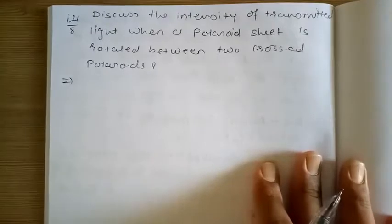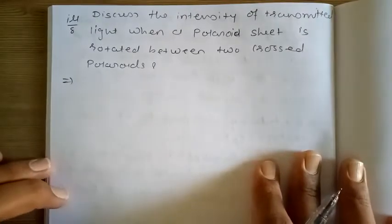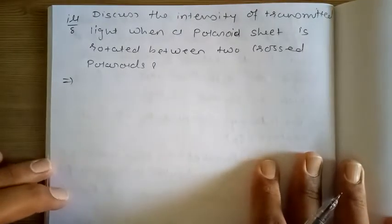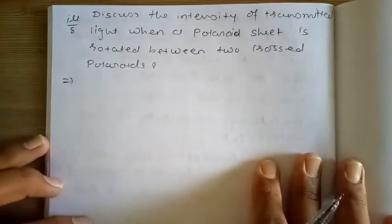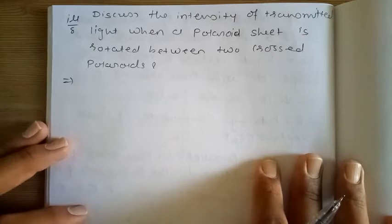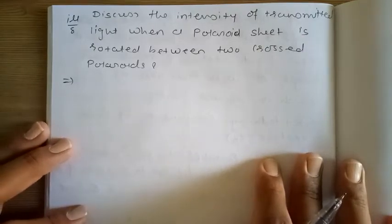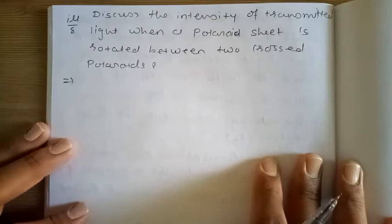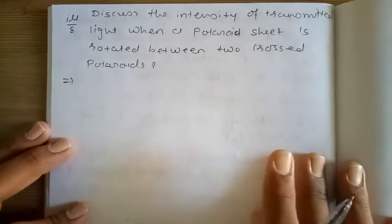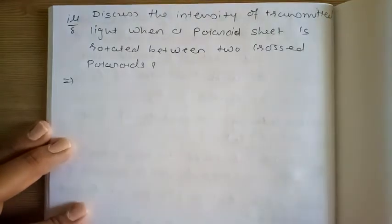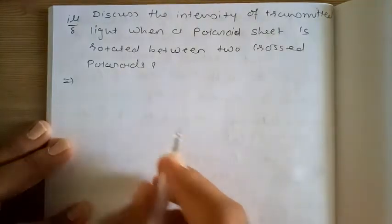Hello friends. Illustration No. 8: Discuss the intensity of transmitted light when a polaroid sheet is rotated between two cross polaroids.